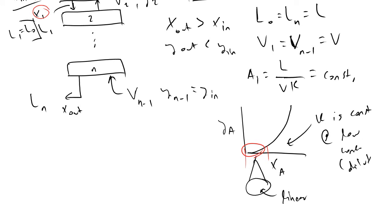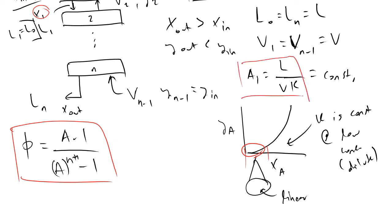And so to get to the main point here, the Kremser equation tells us that the fraction not absorbed, phi, is equal to A minus one divided by A to the n plus one minus one. So this is the main takeaway from the Kremser equation, where n is the number of trays and A is the absorption factor A sub i.